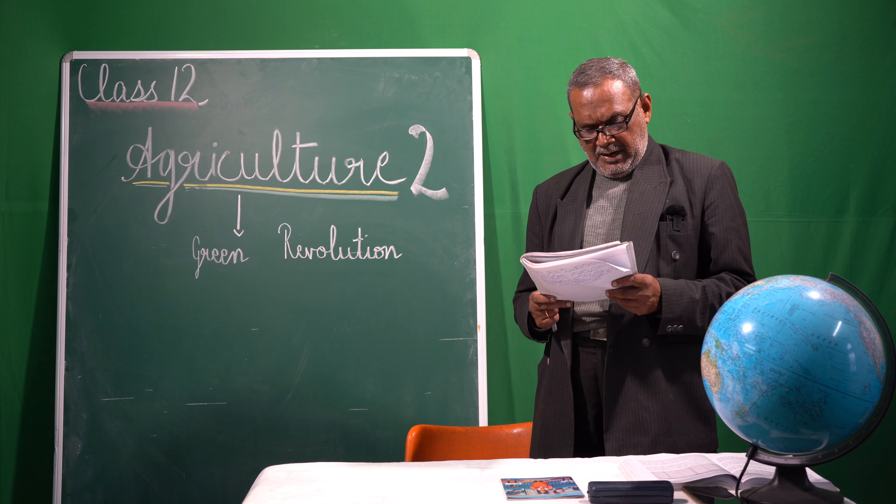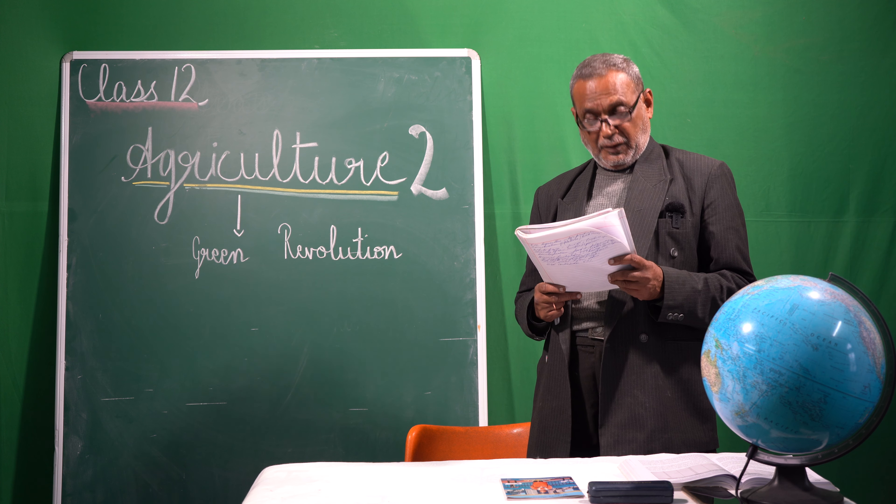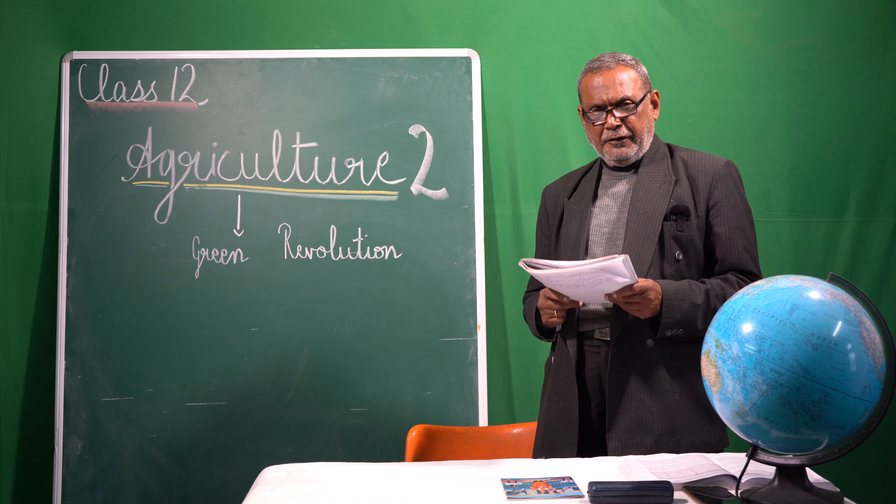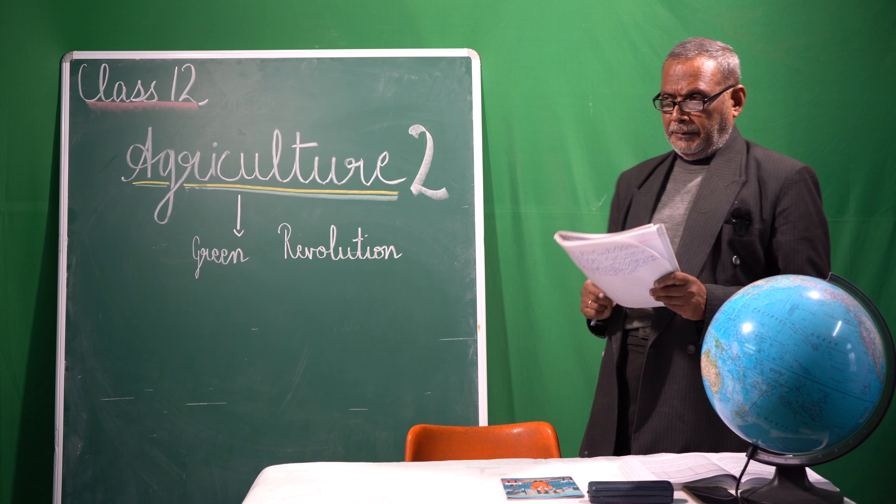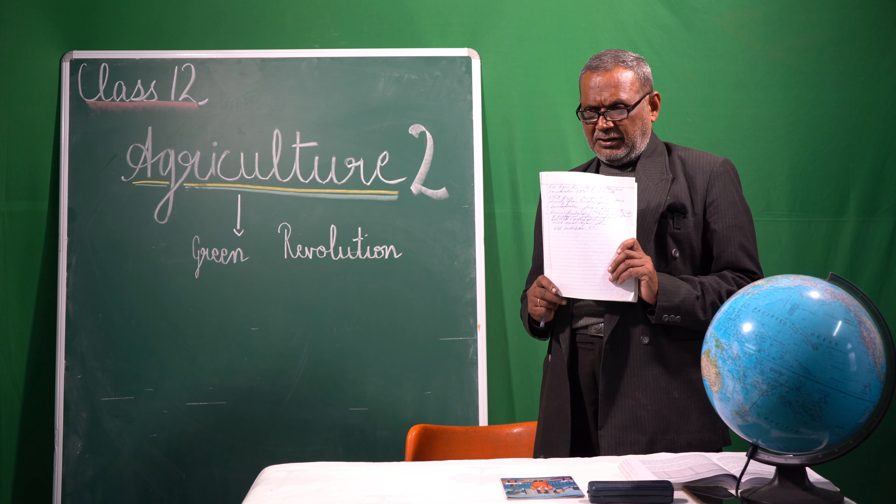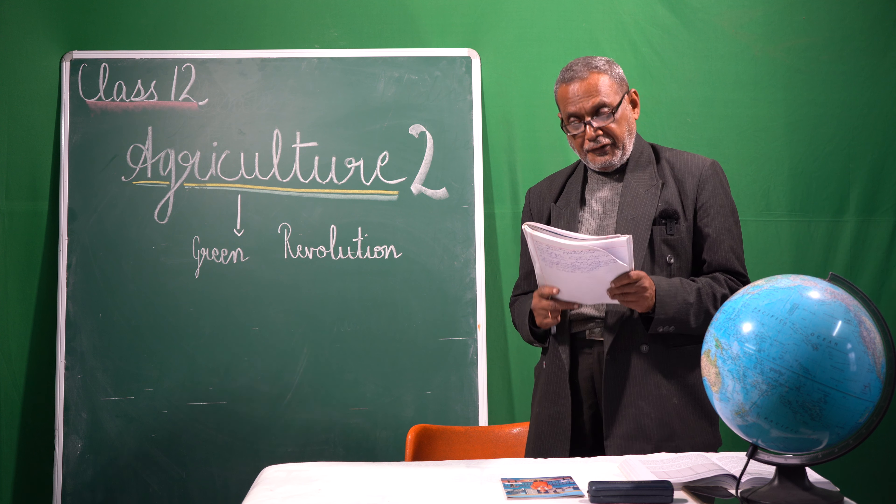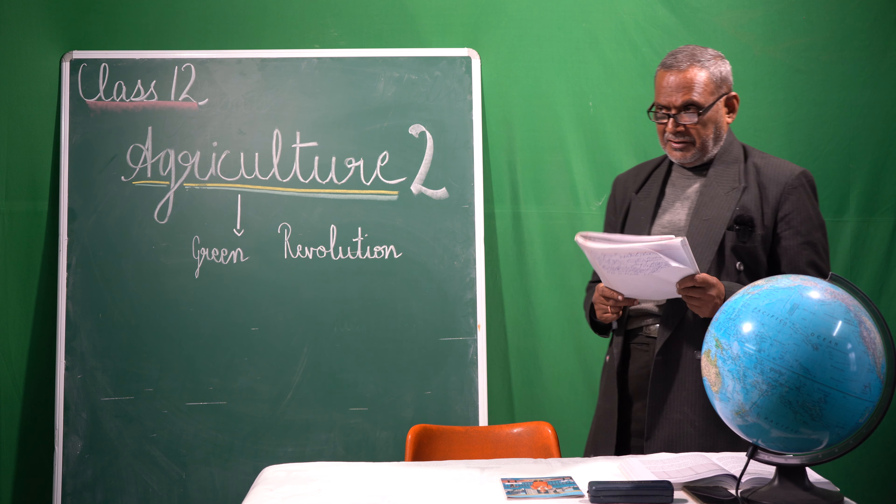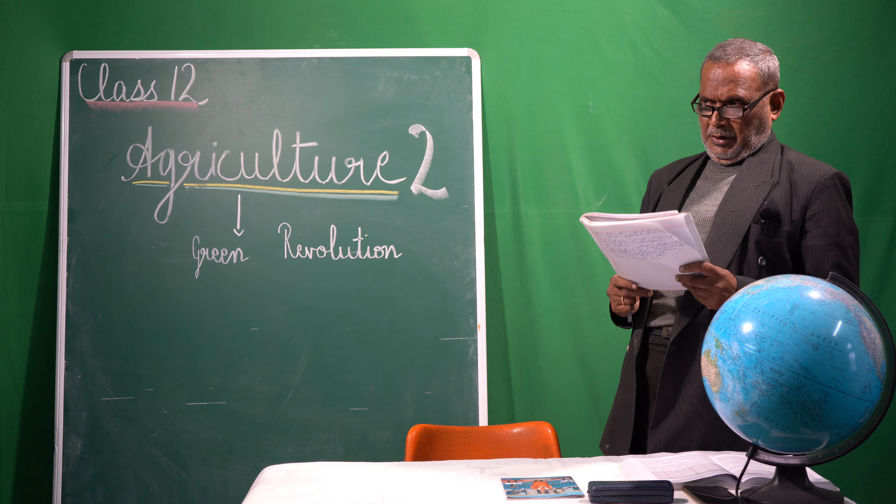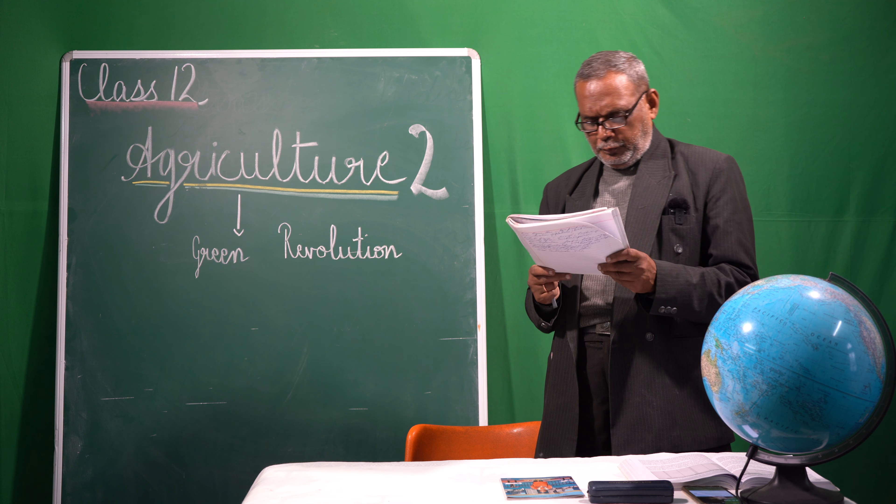As a result of the first green revolution, we became self-sufficient in food. What does it mean? It means that we grow enough food grains in our country to cater to every mouth. It is a very big feat thanks to our scientists and our farmers who helped increase the food production in our country.